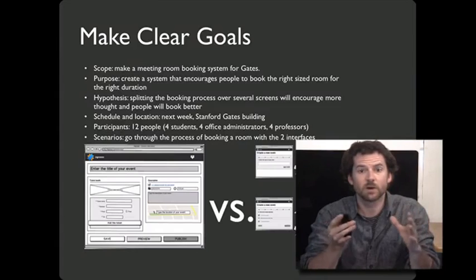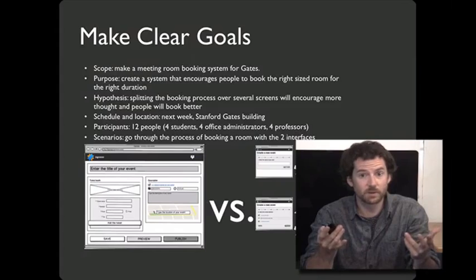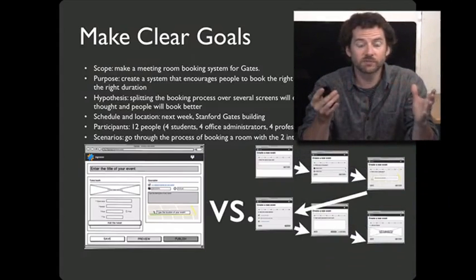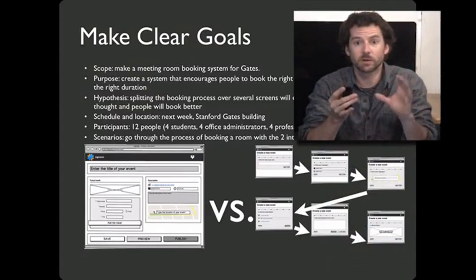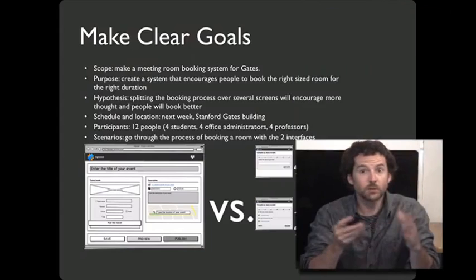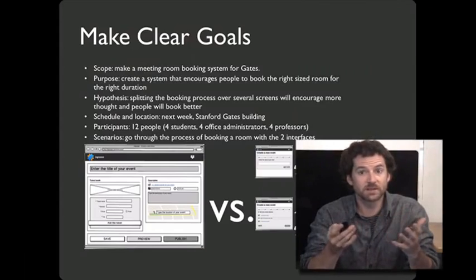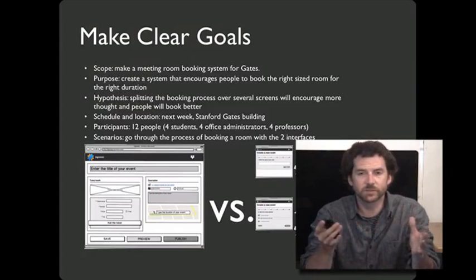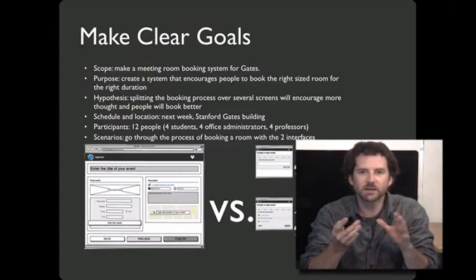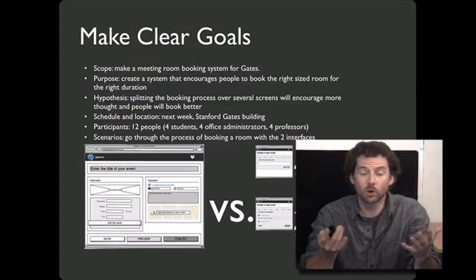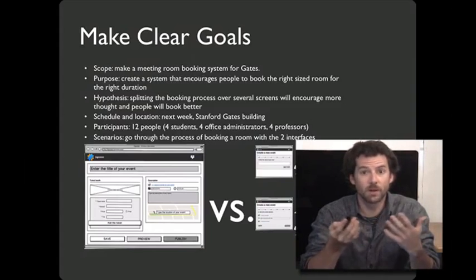The first step is to make clear goals. For example, say you were building a room reservation system for a computer science department. One strategy would be to put all the information on one page; another would put different pieces on different pages. You might be particularly interested in whether splitting things up changes whether people will book a right-sized room or not. Lay out the scope of your study — you don't need to cover an entire system. That scope will be guided by the purpose of your study and what you hope to learn. Come up with a hypothesis ahead of time and figure out a way to know whether your hypothesis is true or not.